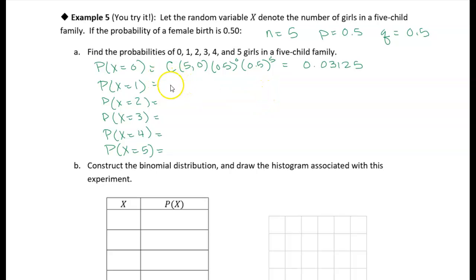And we're just going to keep doing that. So in this case, x equals one, so we have five choose one, 0.5 to the x, which is one, and 0.5 to the n minus x, which is going to be four. Put that into your calculator, you get 0.15625.